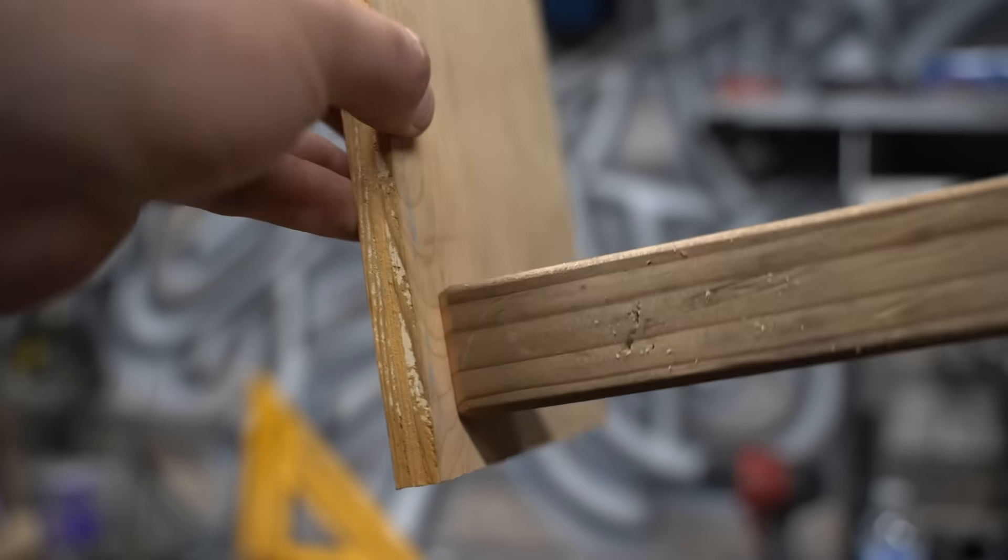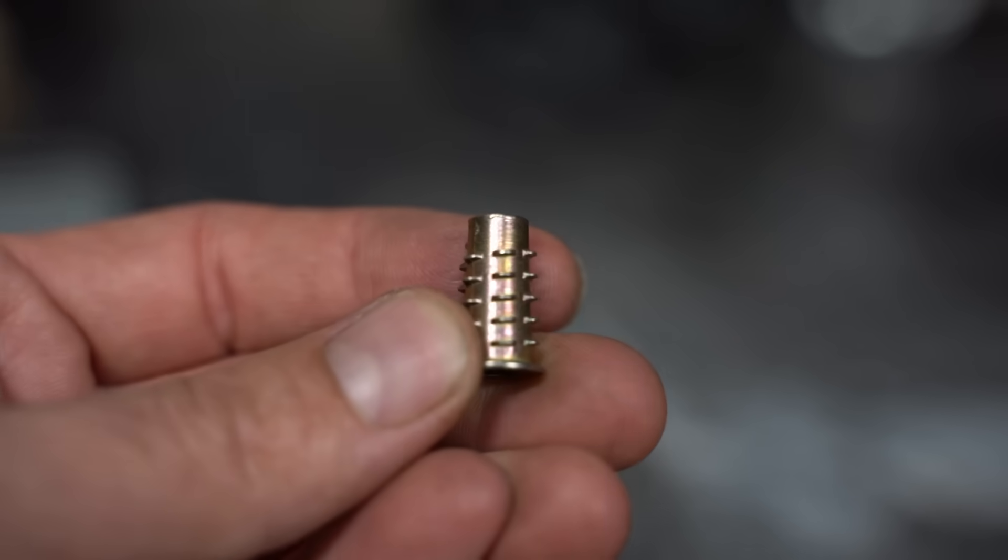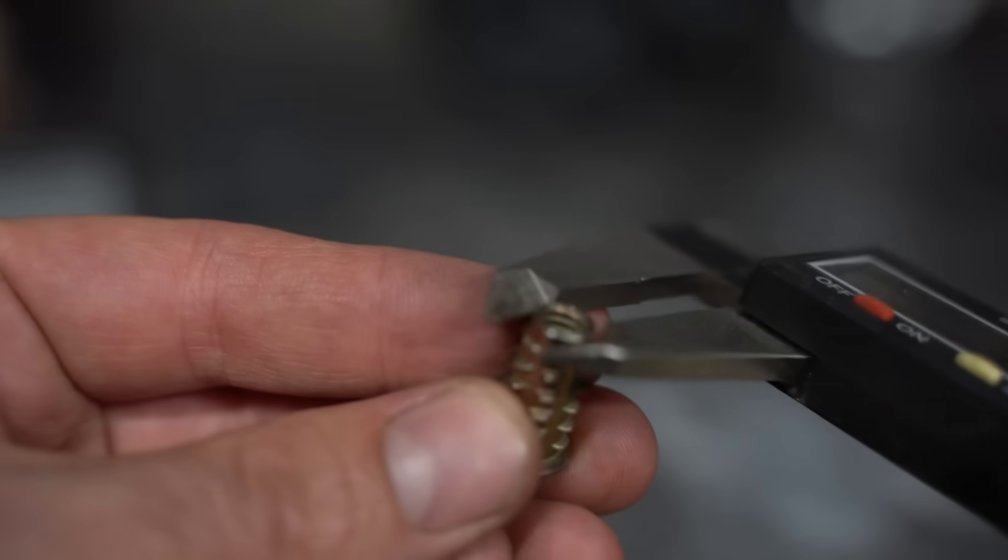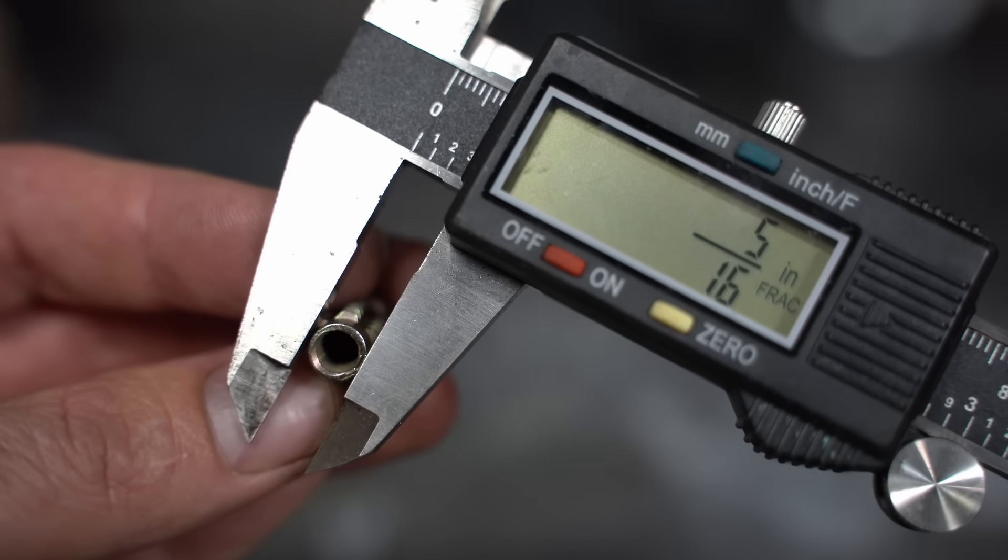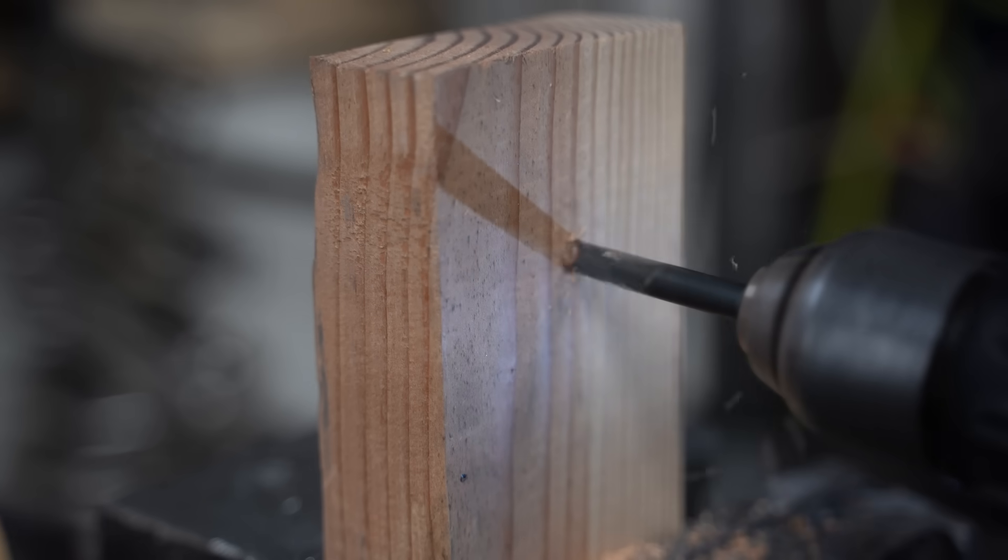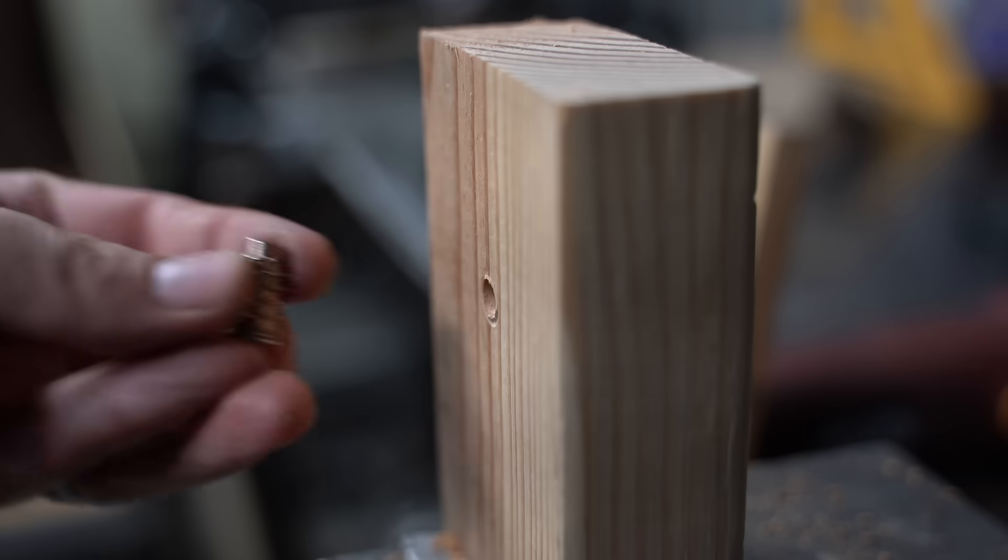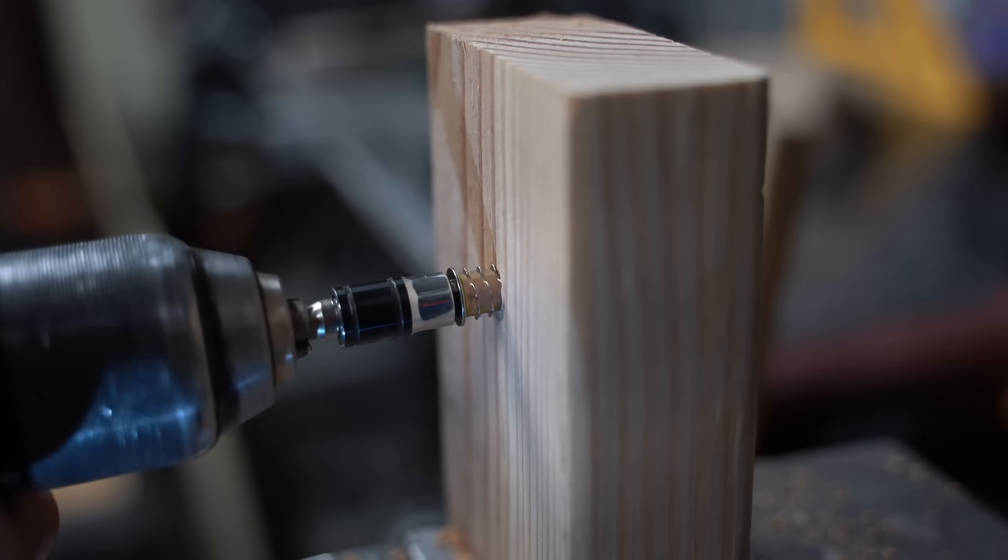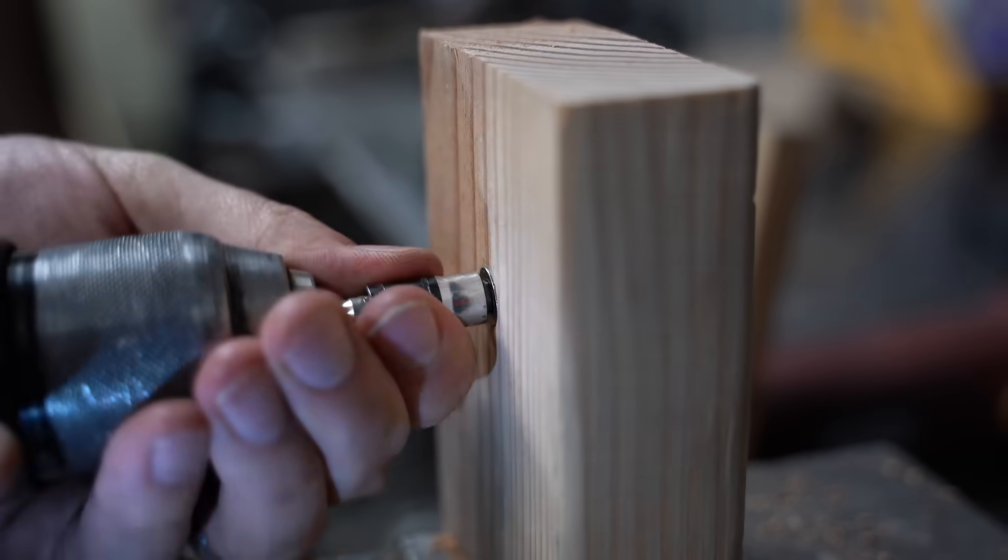If you don't have access to the backside, and never will, a threaded insert would be a much better choice. Measure the diameter of the barrel, drill a hole that size, and screw it in. Ready for voltage.